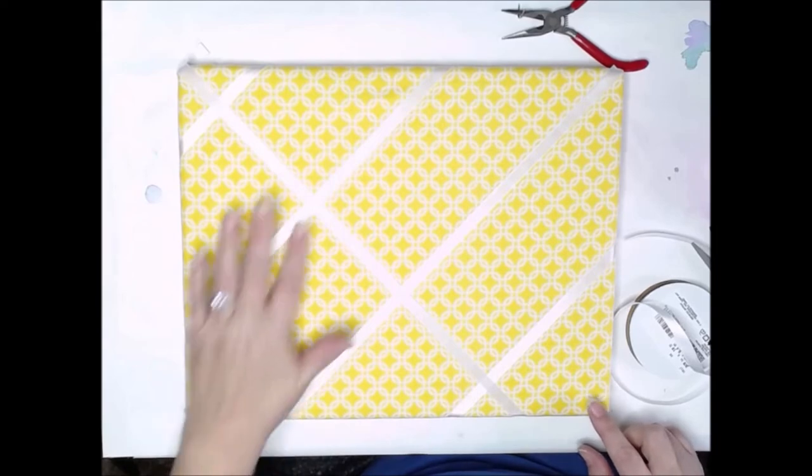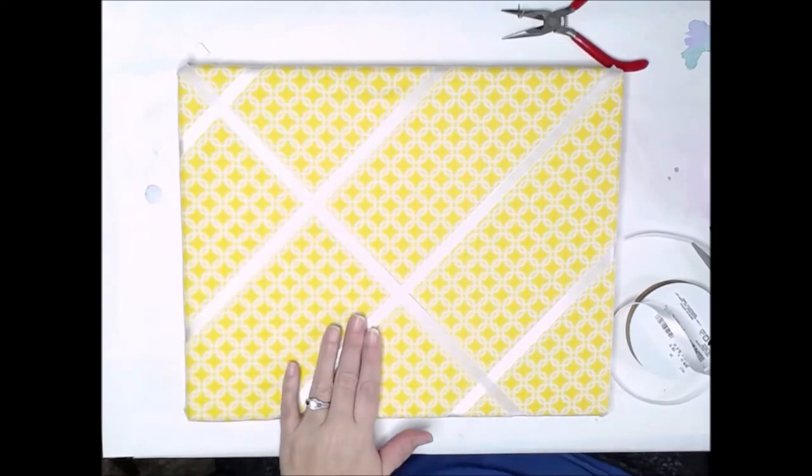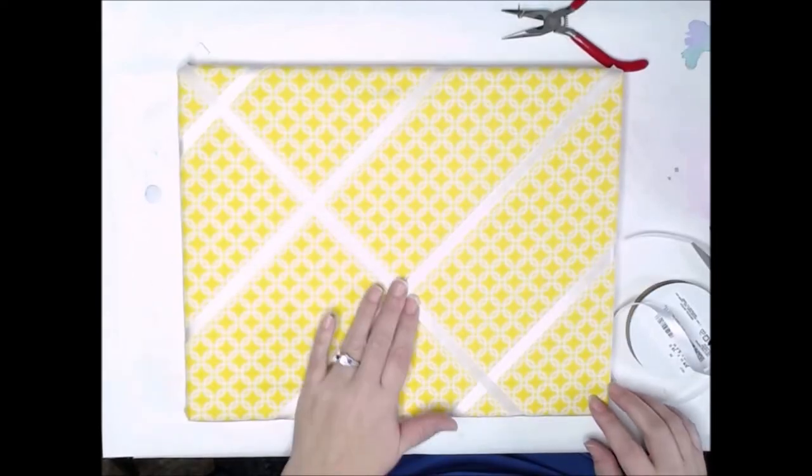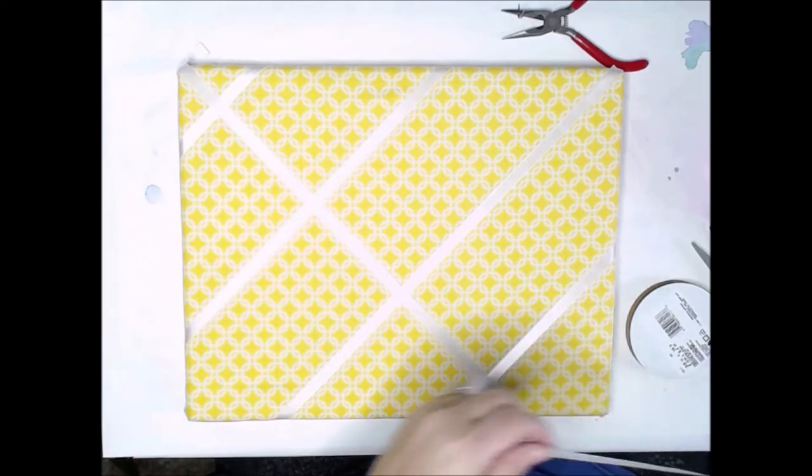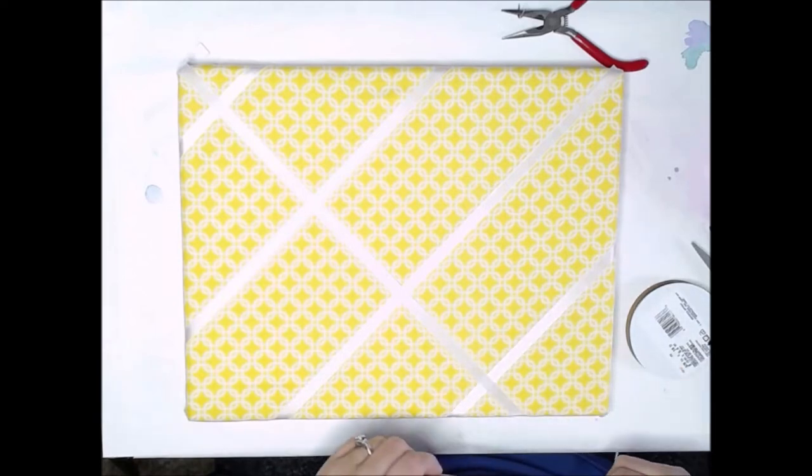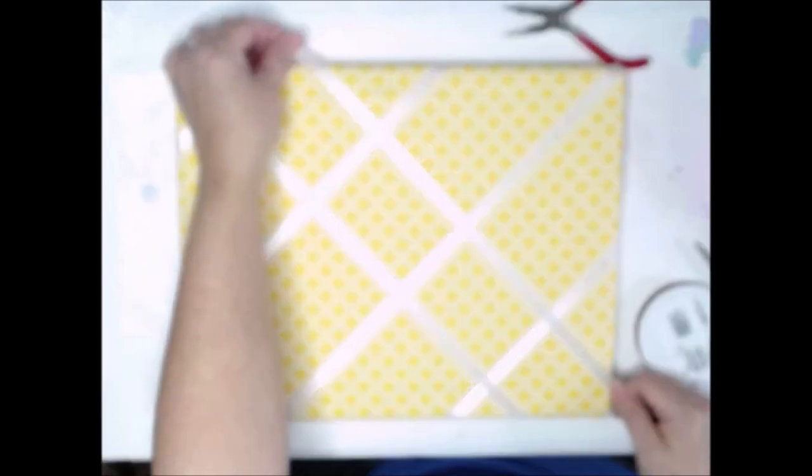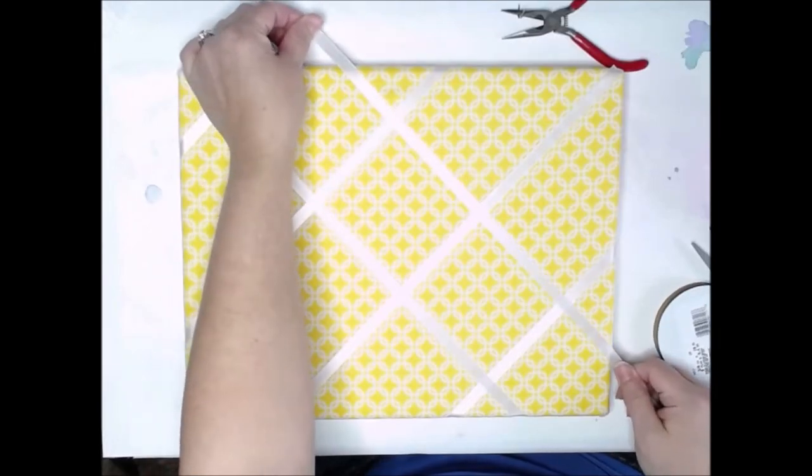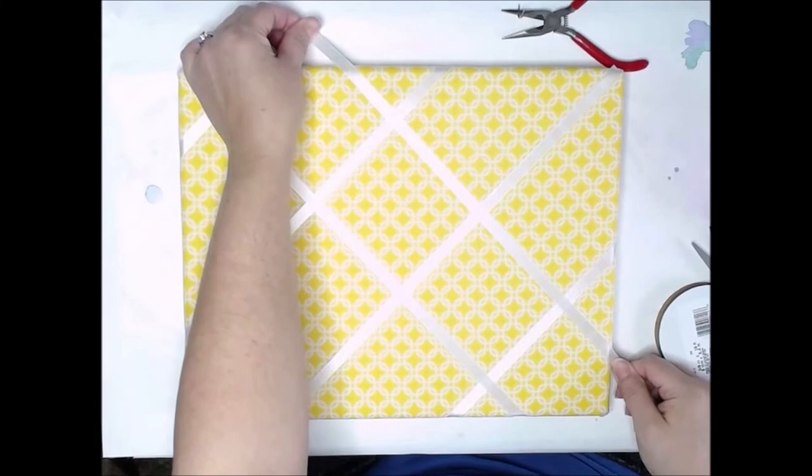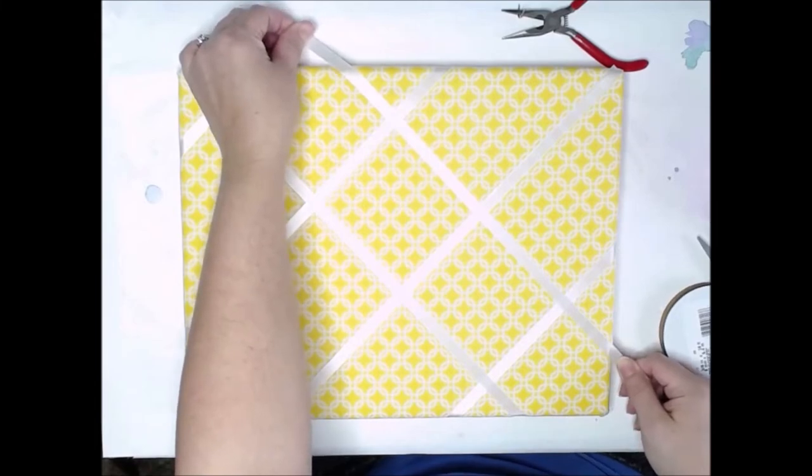Alright. Now that we have all of our stripes going diagonally in one direction, we are going to go back in the other direction. Same way we did before. And just lay them out in the same pattern. So, that when we are done, we have some ribbon squares going diagonally across our piece.